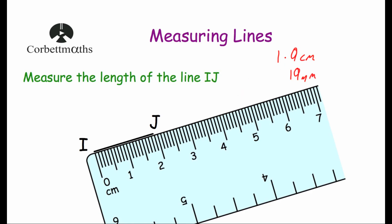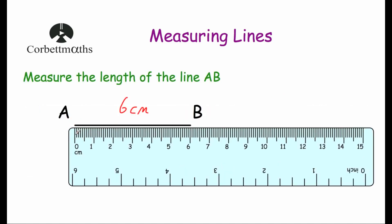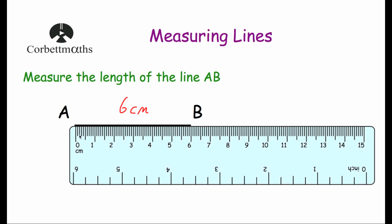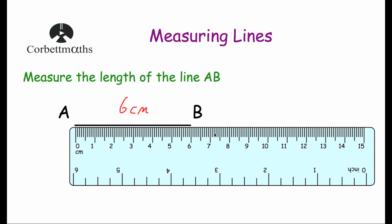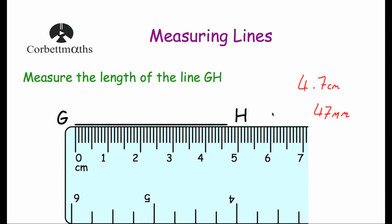So to measure the length of a line, the important things to remember are: make sure you're using the centimetre side of the ruler if asked to measure in centimetres or millimetres. Also make sure you line up the zero with the beginning of the line — sometimes students accidentally don't start at zero. If the line is vertical or diagonal, line up the ruler perfectly with it. Finally, sometimes measurements aren't a whole number of centimetres, so you may need to write something like four point seven centimetres. And remember, you can use millimetres by noting that there are ten millimetres per centimetre.